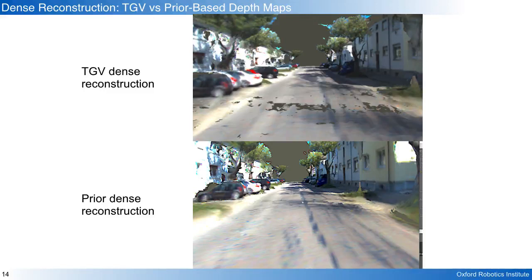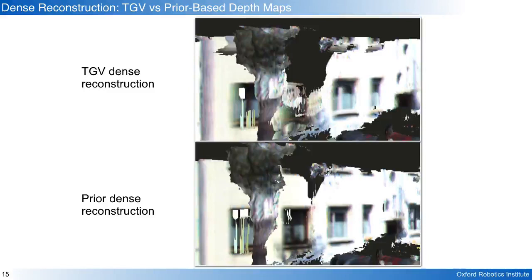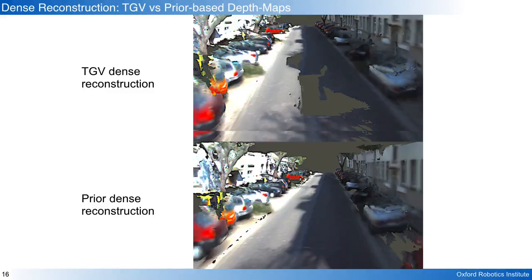When we zoom in on the reconstructions we can see that the road surface appears smoother, the walls more accurate, and we have more coverage with the prior depth maps.